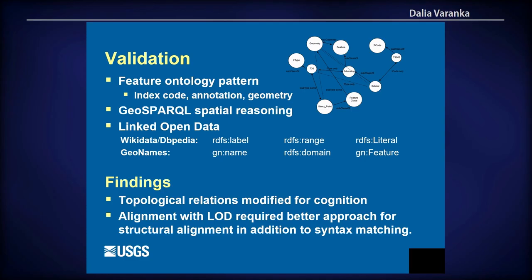To effectively represent landscapes, GeoSPARQL operations required an infusion of cognitive spatial thinking beyond logic. Relating data from the National Map with linked open data drew on W3C and OGC properties intended to support graph reuse, but collectively were difficult to apply. A better metadata annotation approach for structural alignment, in addition to syntax matching, may be the solution.